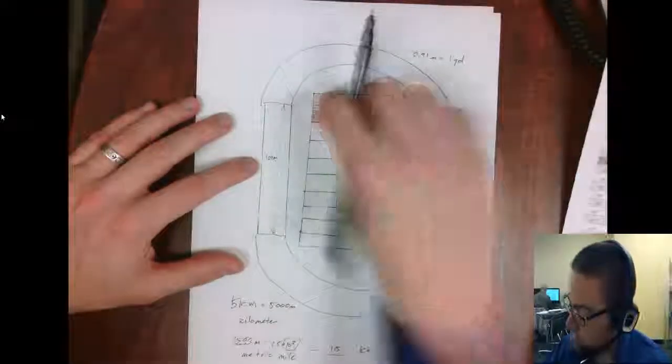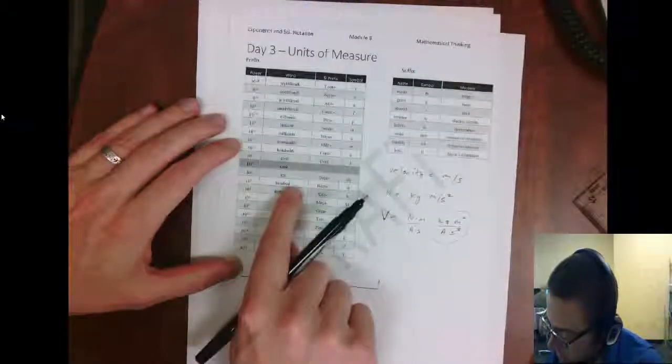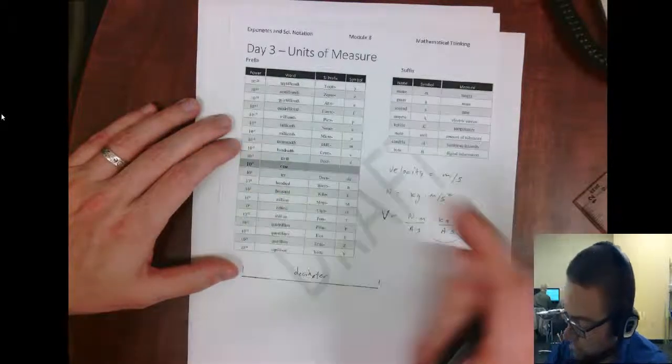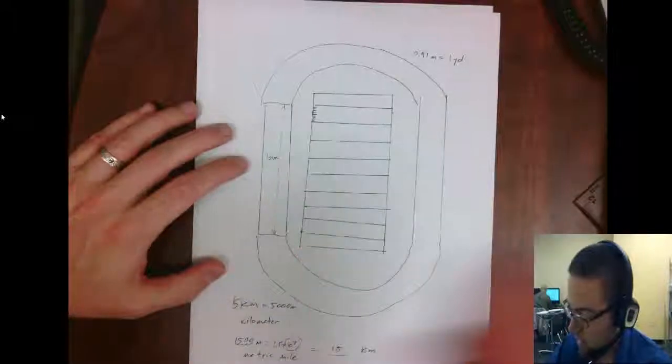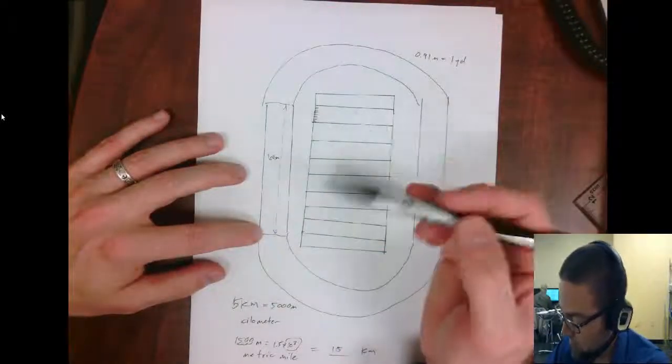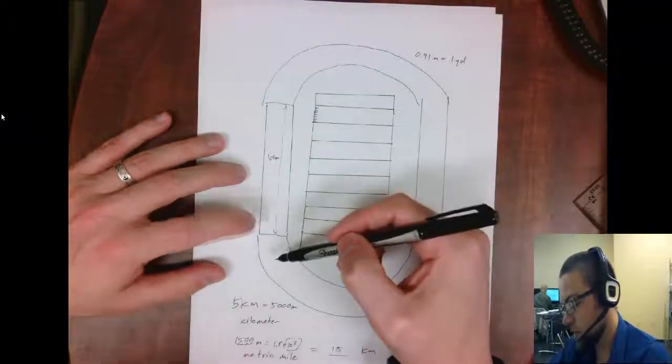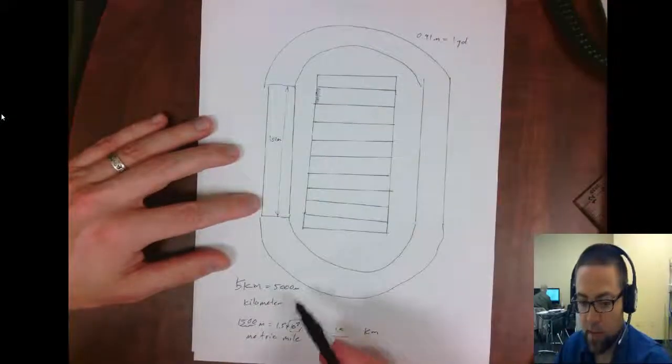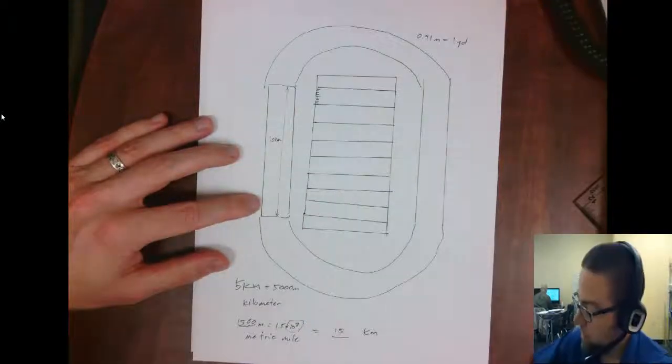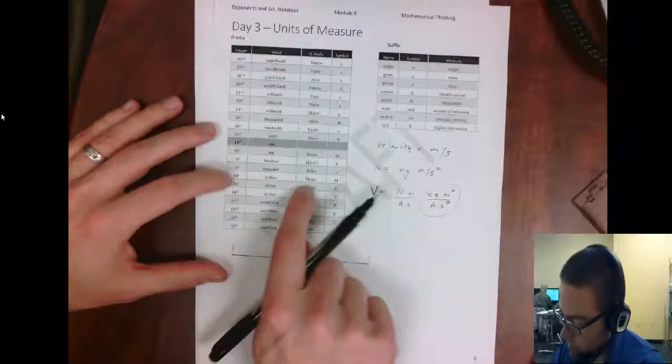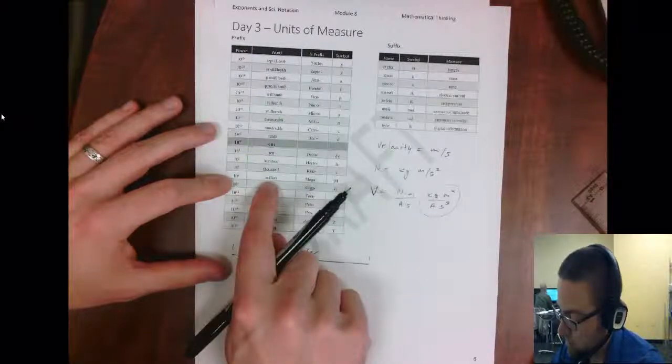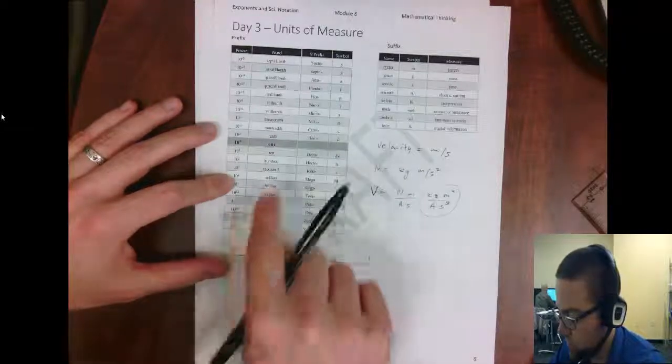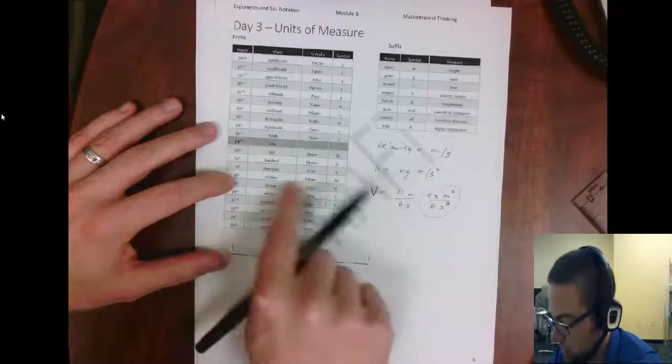So ten of those meters would be a decameter. And then we go up to thousand. And you do hear kilometer used quite a bit. And if you do a 5k, which is a typical distance that people run, that's five kilometers, which is 5,000 meters. And then you don't really hear of any of these other ones. Megameter would be a million meters, which is probably bigger than the radius, or the circumference of the earth. So you don't really hear about this one.